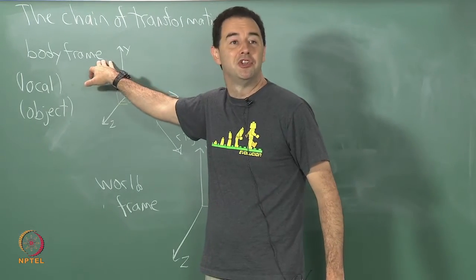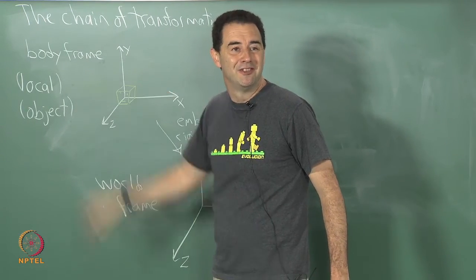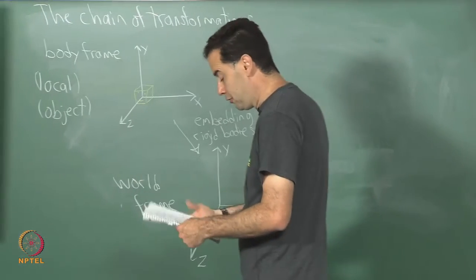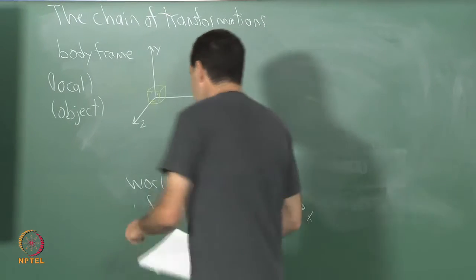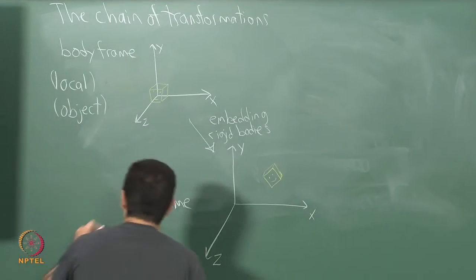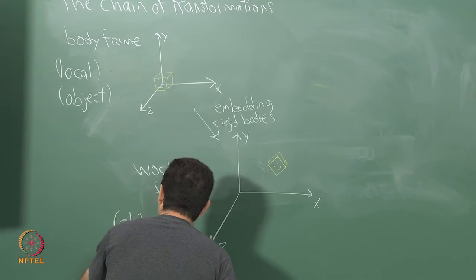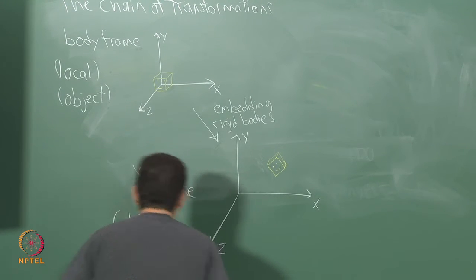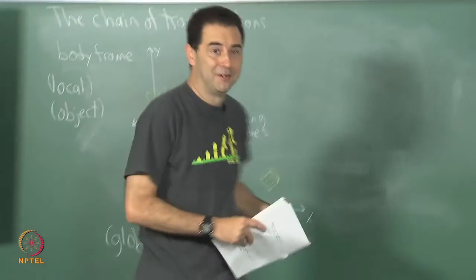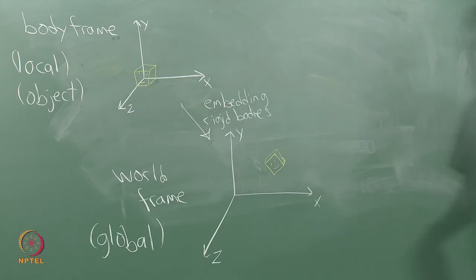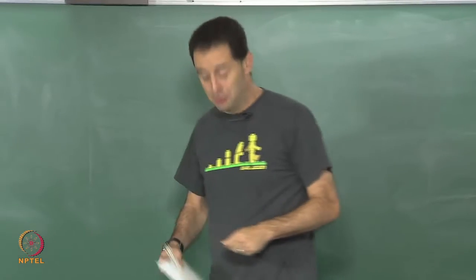There are different names for these: sometimes this will be called a local frame or sometimes called an object frame. Local frame is more general — from mathematics it shows up in differential geometry and related areas. Object frame is very common in computer graphics, and body frame is very common in engineering. The world frame, if you use the term local frame, the nice word for that is global — it is a global frame, the common frame of reference that you would like to put all of your bodies into.